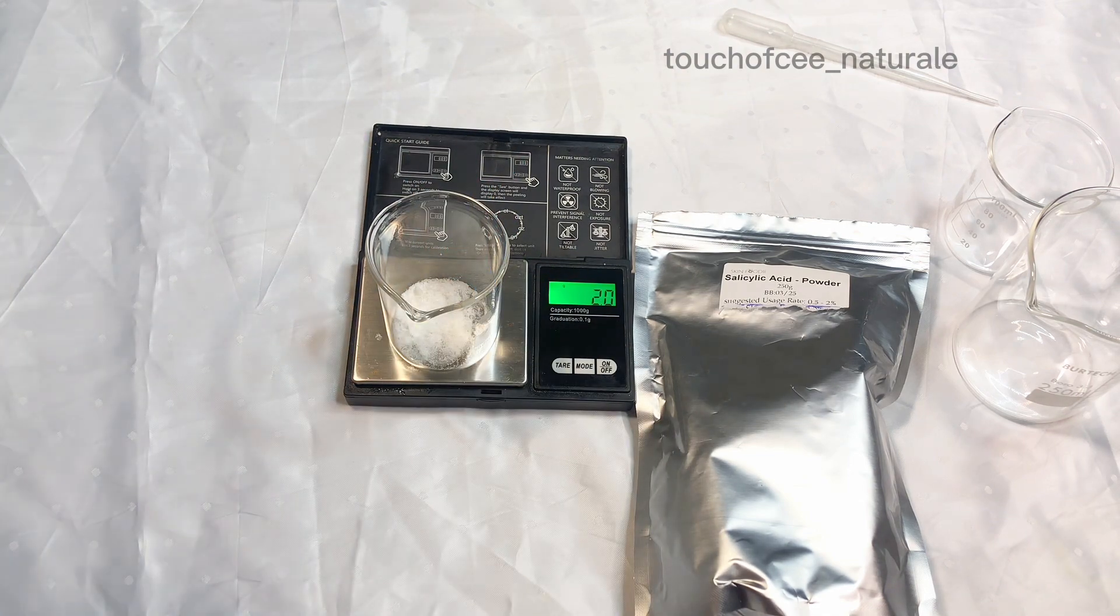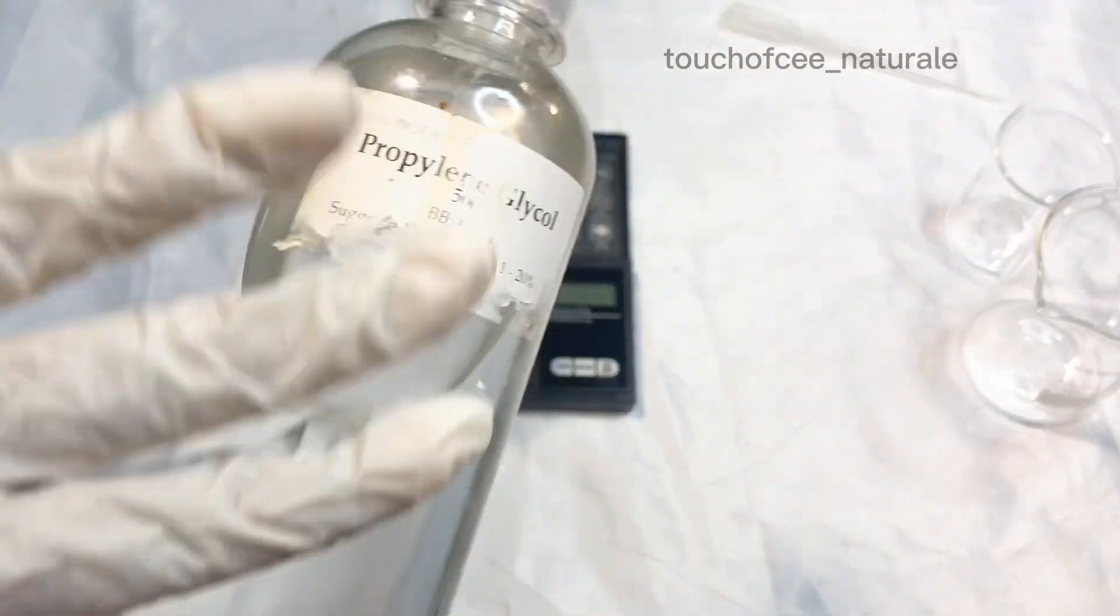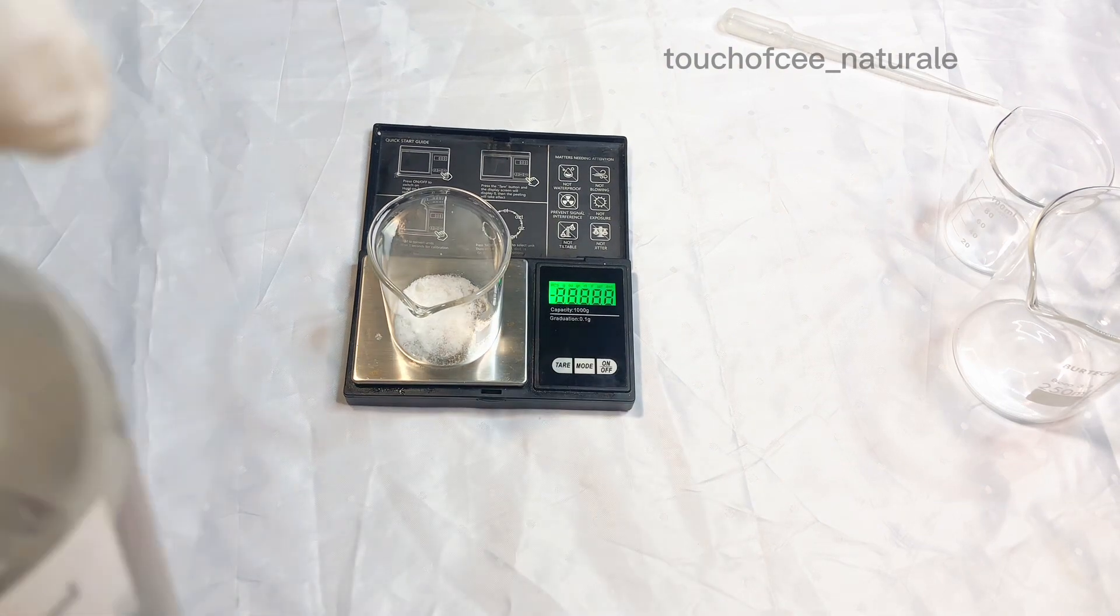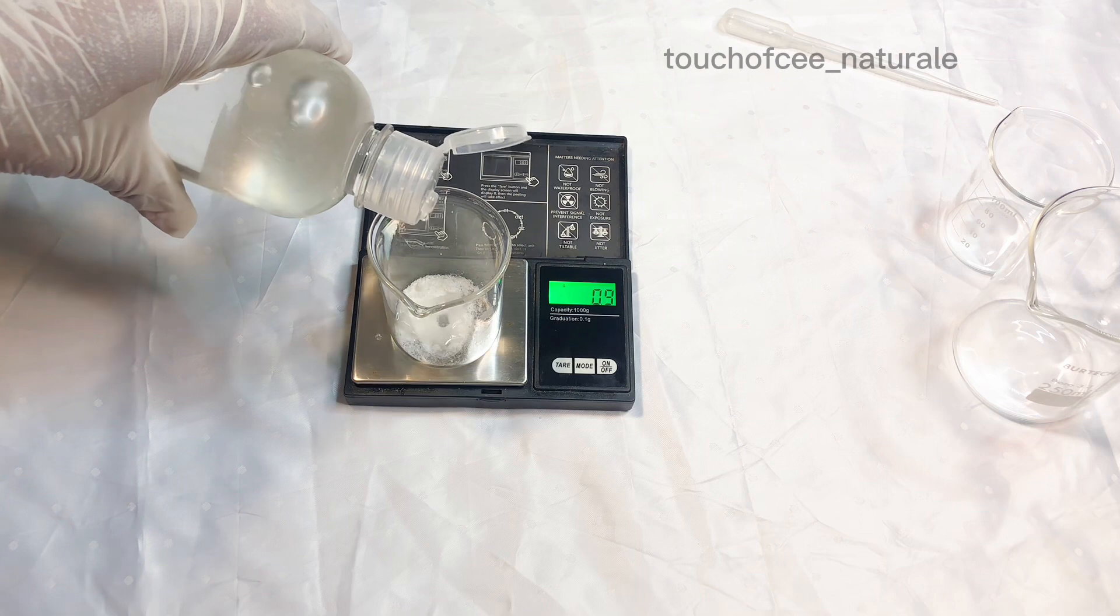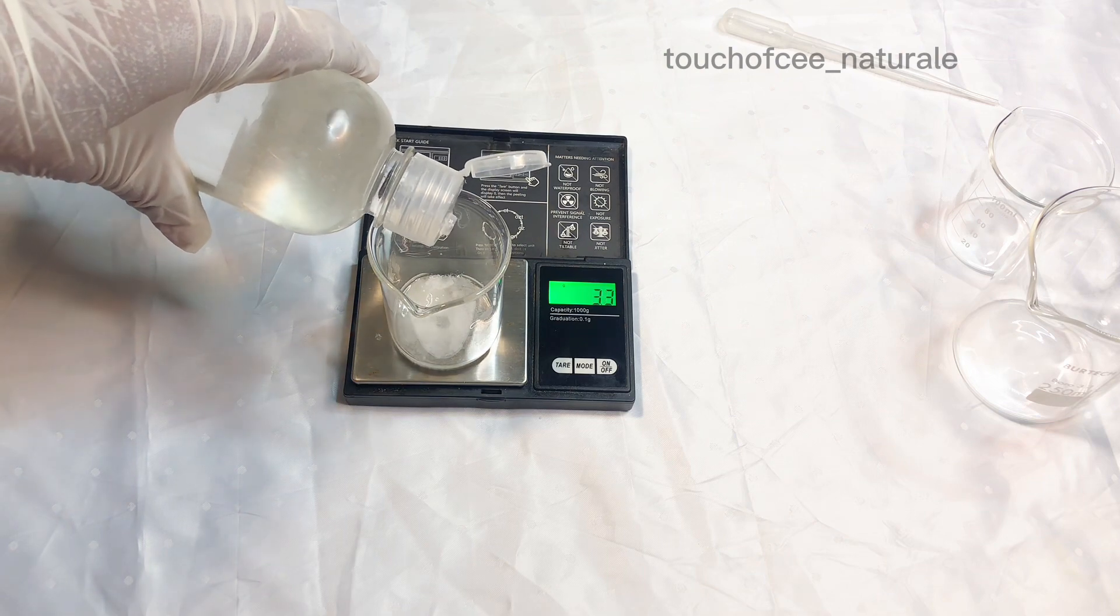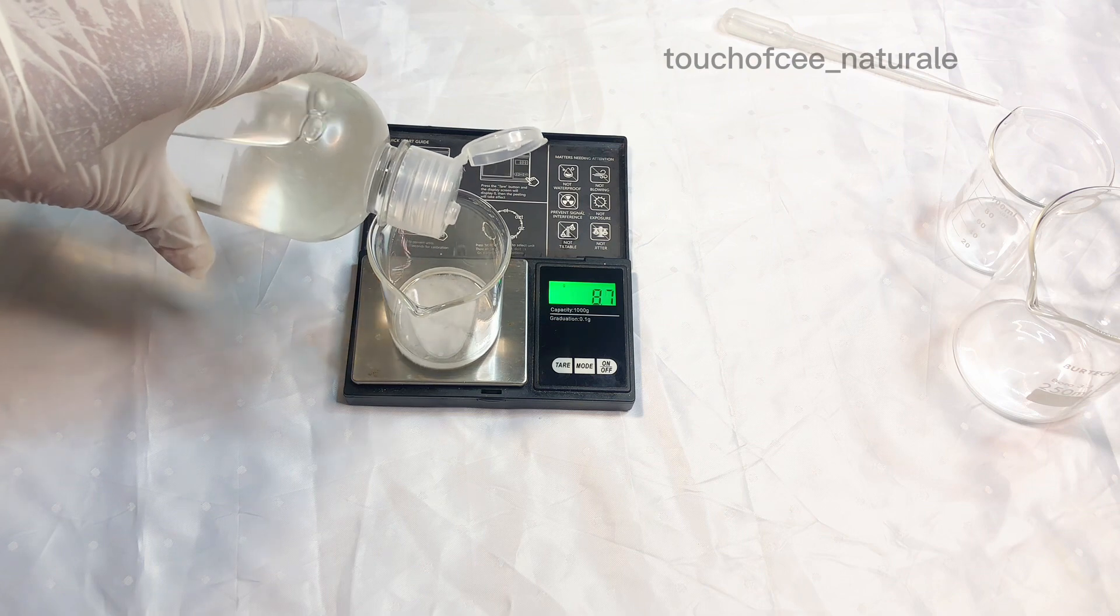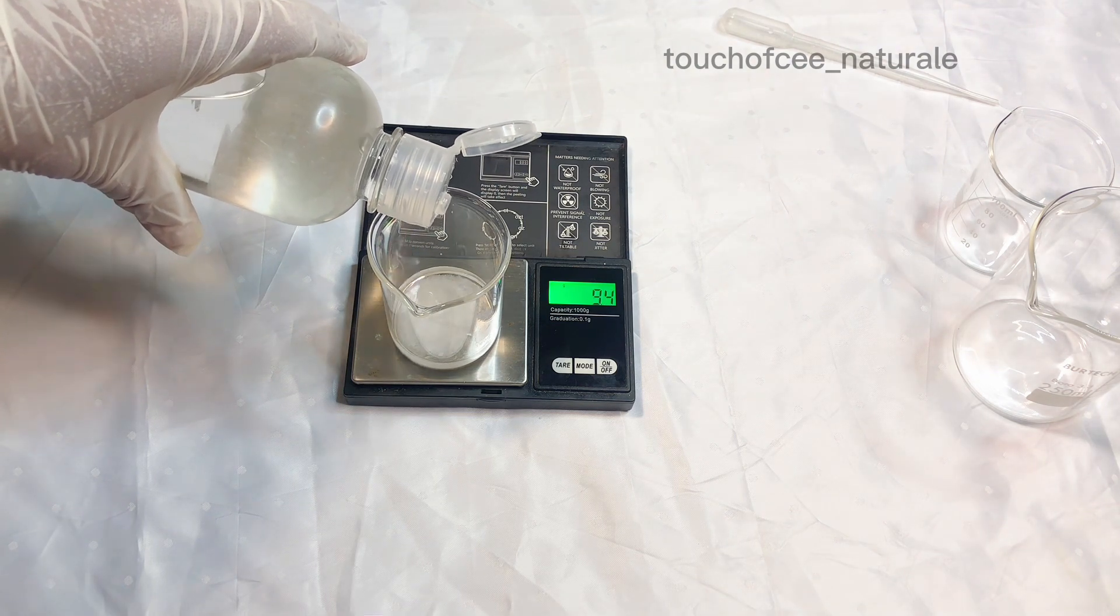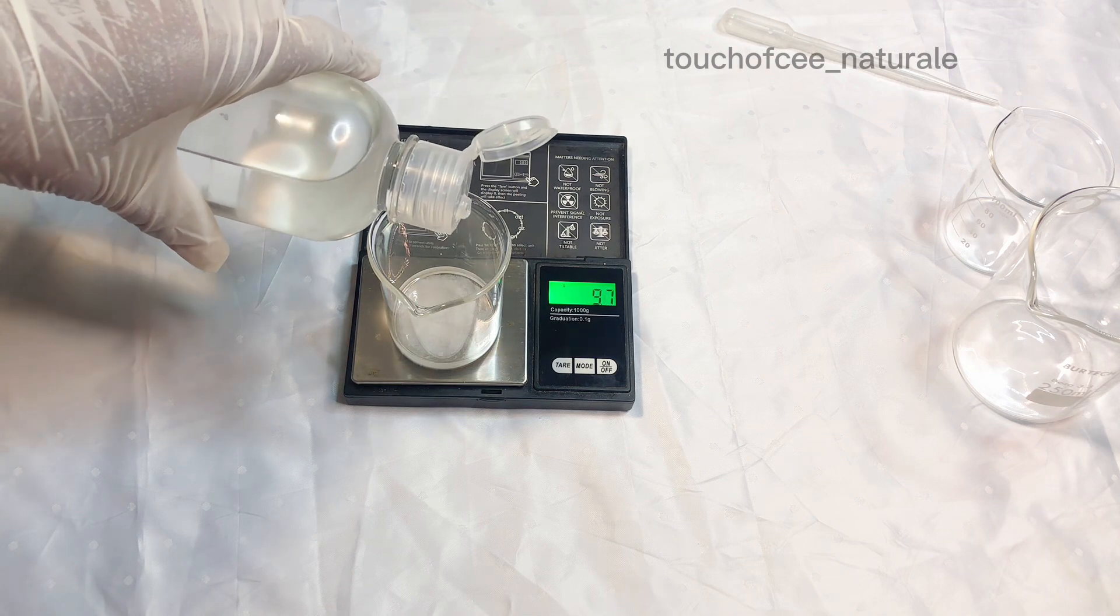I'm measuring out my salicylic acid powder. The trick for this formulation is dissolving your salicylic acid properly. For this I'm using propylene glycol to dissolve my salicylic acid powder. A lot of people struggle with dissolving their salicylic acid powder, which was one of the issues I had when I first started trying to formulate salicylic acid all the way back in 2021.